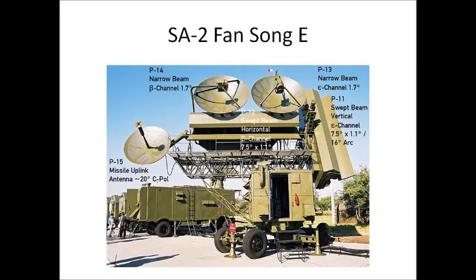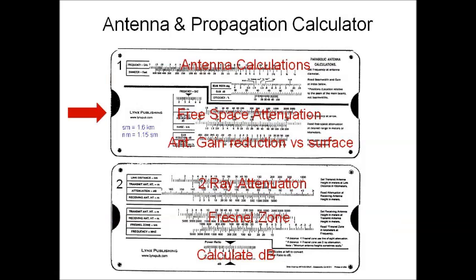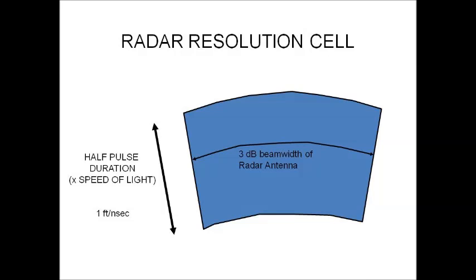One of the tools presented in this course, which attendees are taught how to use, is an antenna and propagation calculator — a slide rule showing both sides. From this, they learn to make antenna performance calculations based on the size of a radar antenna and its operating frequency. We cover three different types of radio propagation, two of which are supported by this slide rule: free space attenuation, which is how radars and other high-frequency devices propagate, and two-ray propagation near the ground, very important for communication signals. The Fresnel Zone is one of the calculations needed for two-ray attenuation. There's also a dB scale — a very useful tool, and they learn how to use all of the scales on this device.